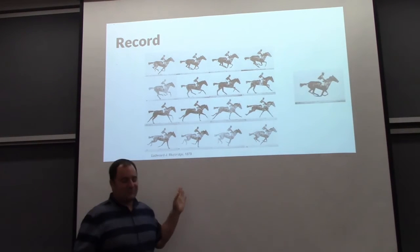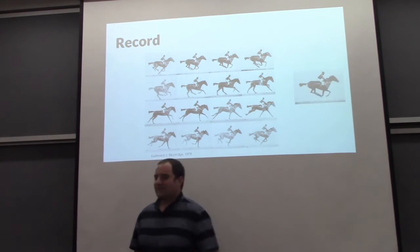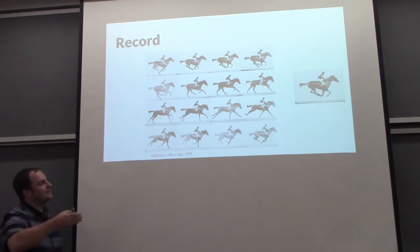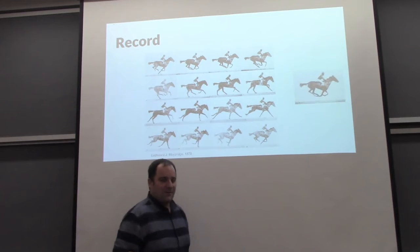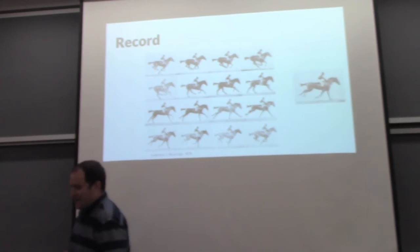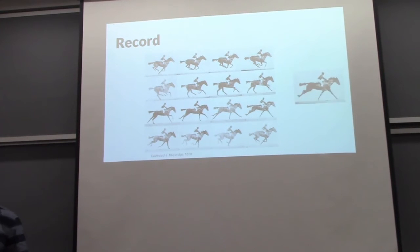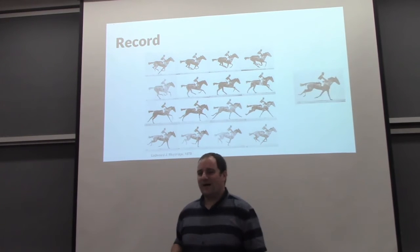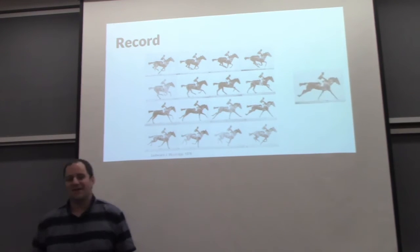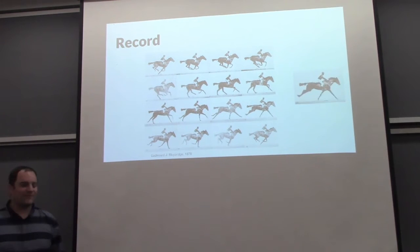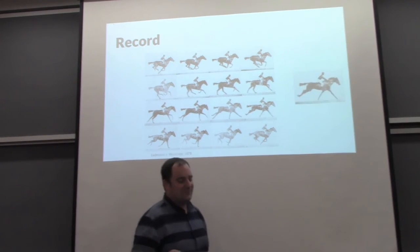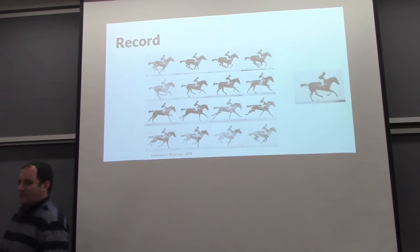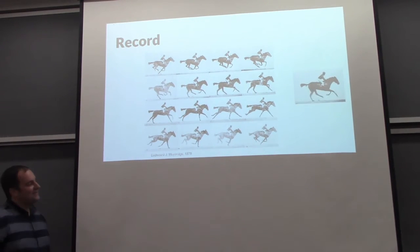A completely unrelated anecdote: Muybridge was a benefactor of Stanford and did a lot of photographic studies. He also had a very young wife who got pregnant, and he later found out the child was not his. He went to see the lover of his wife and shot him in cold blood. He was arrested and tried an insanity plea, which didn't work, but the jury acquitted him because of justifiable homicide. Different times.